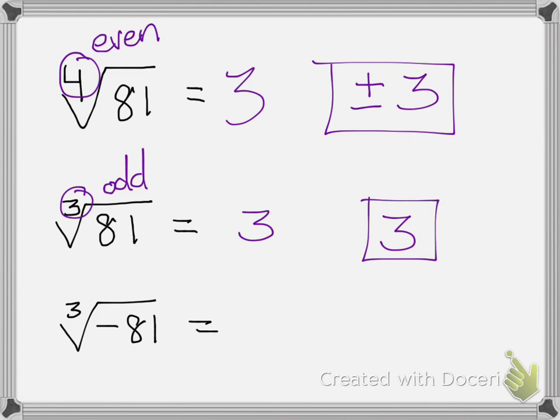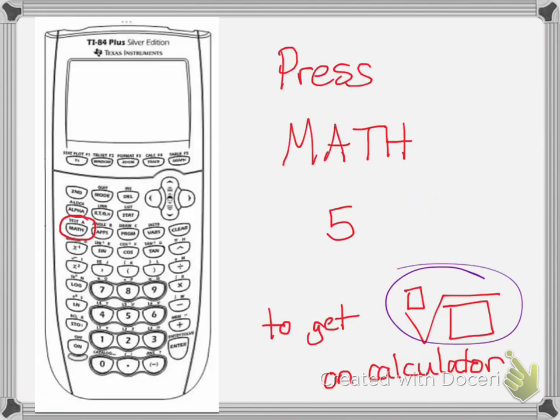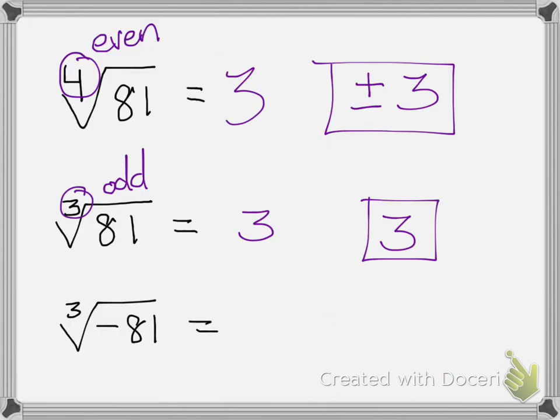All right, now let's do the cube root of negative 81. Press math, number five, to get that. Type in three as your nth root and negative 81 under the radical side. And then you'll see it equals negative three. Since this is odd, it's going to equal negative three. And that's it.